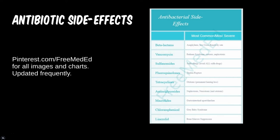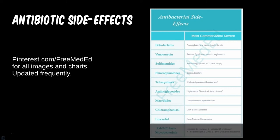Bone marrow suppression is a common side effect seen in many medication classes, not just antibiotics. It takes an entire pharmacology course to cover all the details for each specific drug within each class — this is simply a broad overview to form a foundation. For the RIPE drugs, they all have the ability to cause hepatitis.